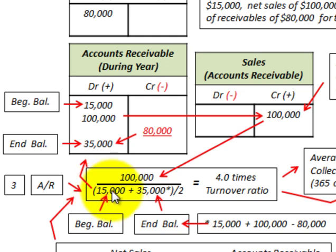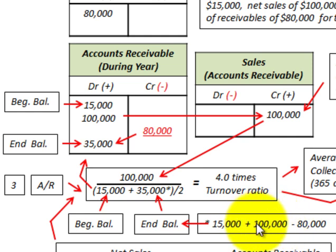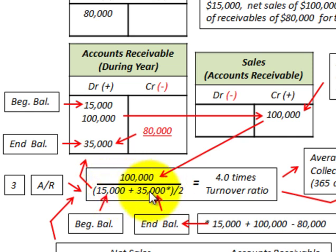For the beginning balance, we have $15,000. Then we add in the ending balance of accounts receivable. That was the $15,000 beginning balance, plus $100,000 increased for the year as accounts receivable, less the $80,000 collected, giving an ending balance of $35,000. So adding beginning and ending balances: $15,000 plus $35,000 equals $50,000, divided by 2, gives us $25,000 as our denominator.